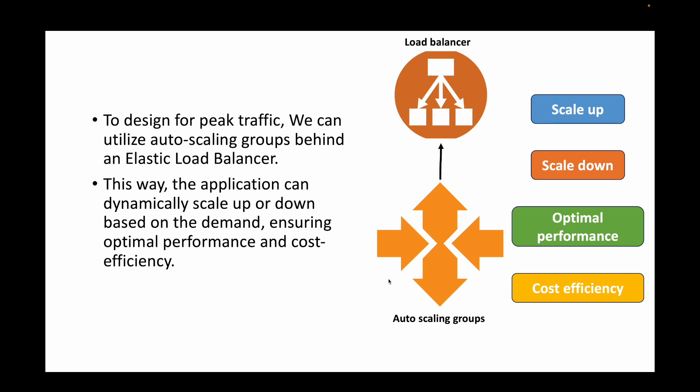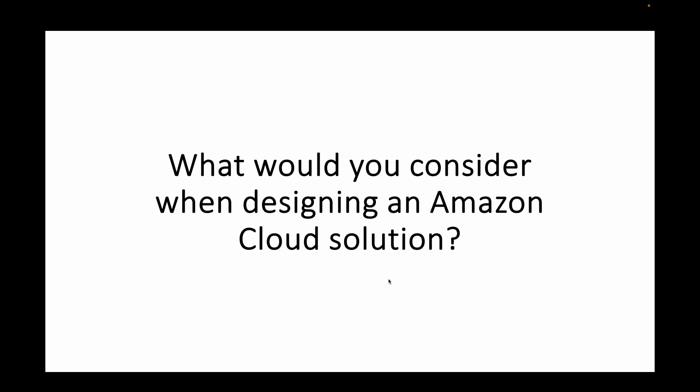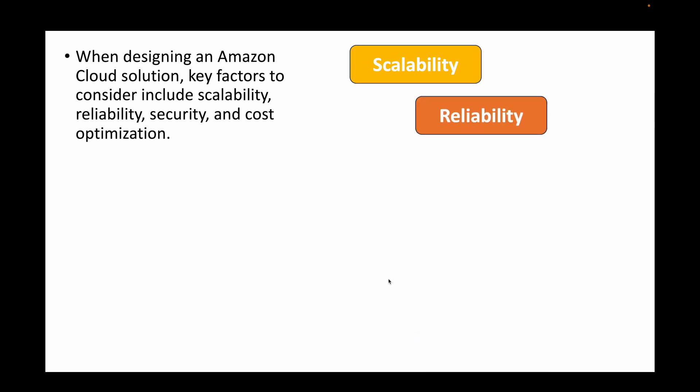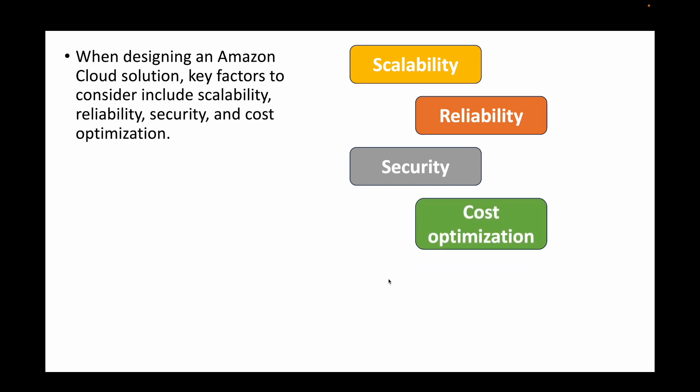The next question: what would you consider when designing an Amazon cloud solution? Whenever we design any solution, there are key factors to consider: scalability — scaling up and scaling down; reliability — how reliable the infrastructure is and the downtime of your applications; security of your infrastructure and applications; and cost optimization. These are the key factors to keep in mind when designing any cloud solution.